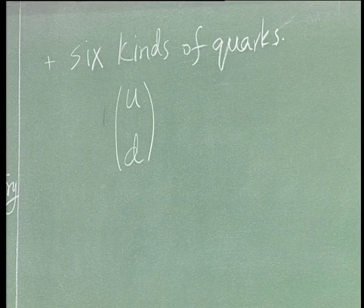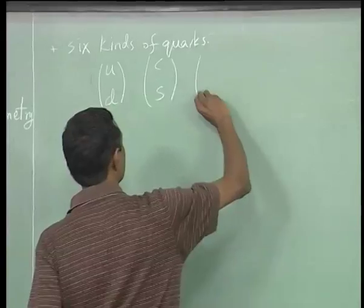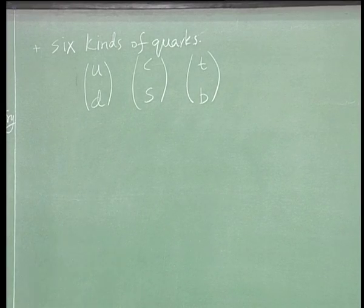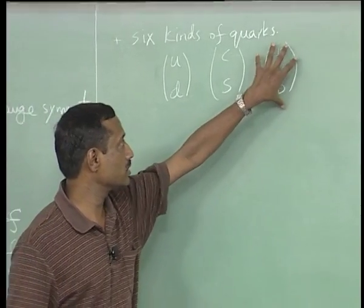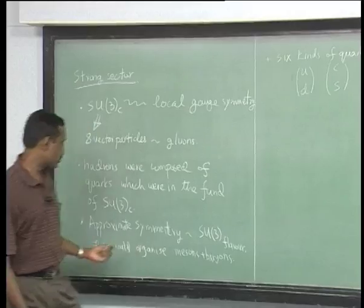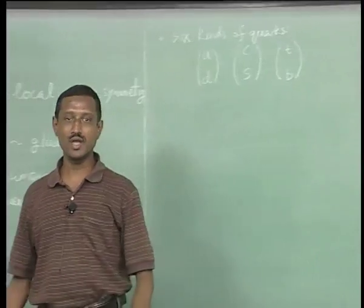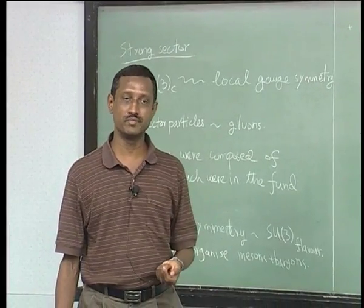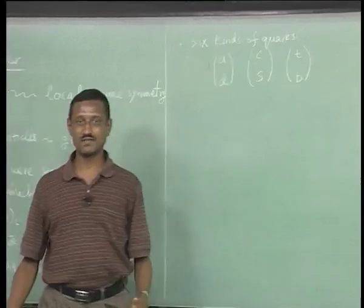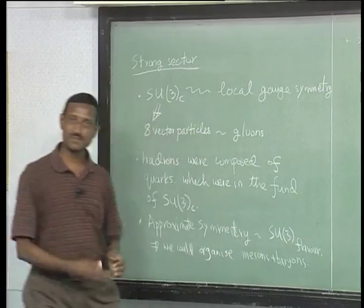Being a little imprecise, the 6 quarks are charm, strange, top, and bottom, plus up and down. The top quark is the most massive. To construct mesons — quark-antiquark pairs — at low energies, creating a b-bbar pair requires twice the mass of the b quark, making it a very high energy object. So in terms of masses, u and d are lighter than c, s, which are lighter than t, b. SU(3) flavor is explicitly broken by the fact that these quarks do not have the same masses.